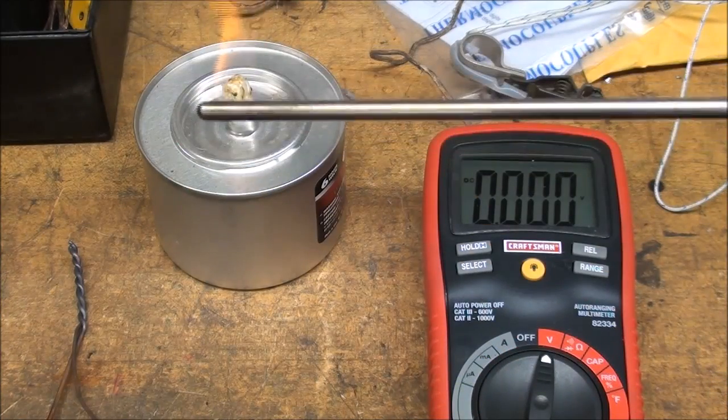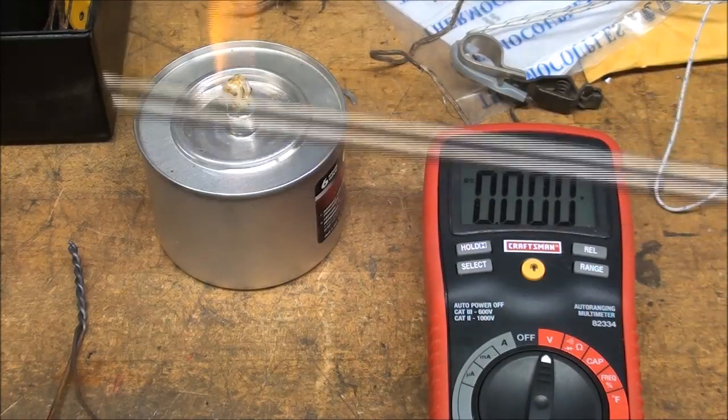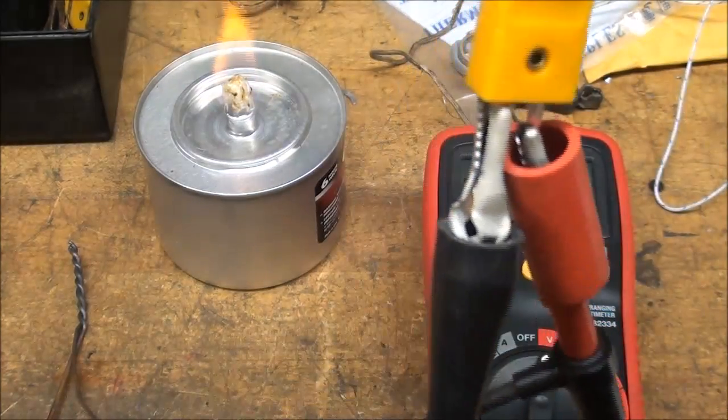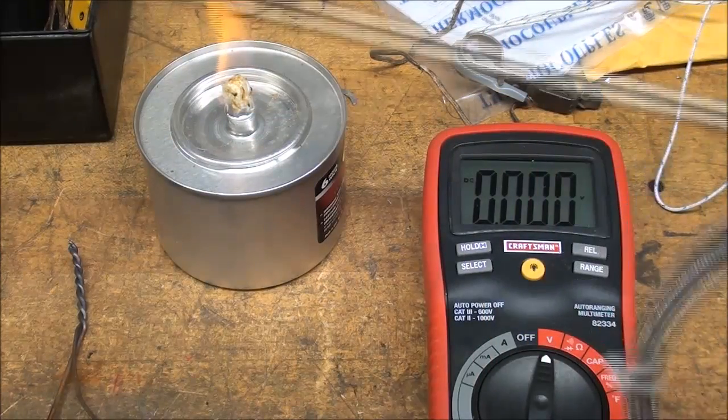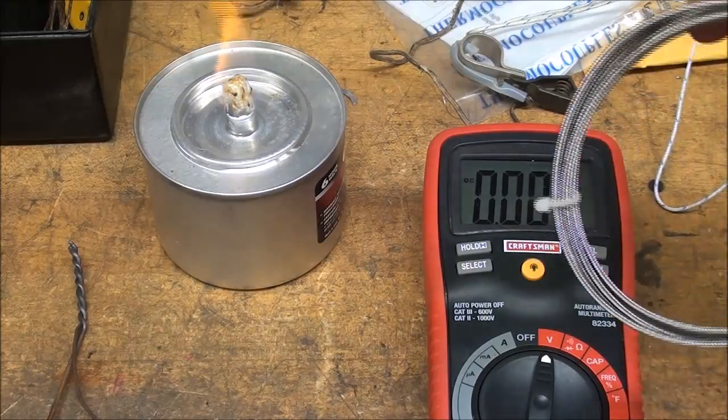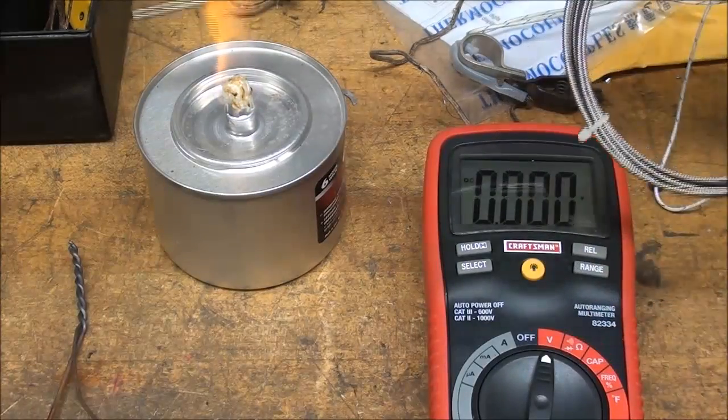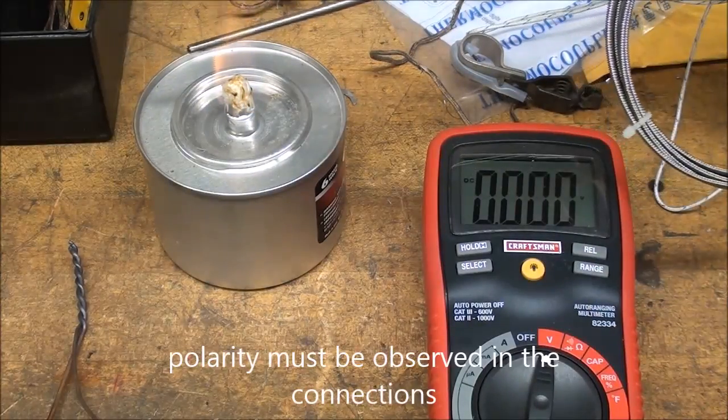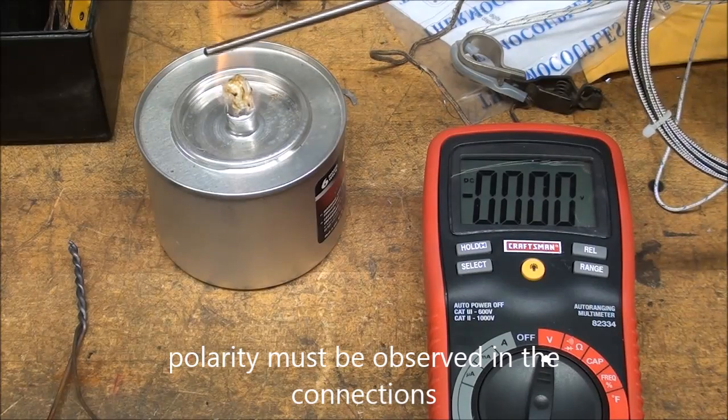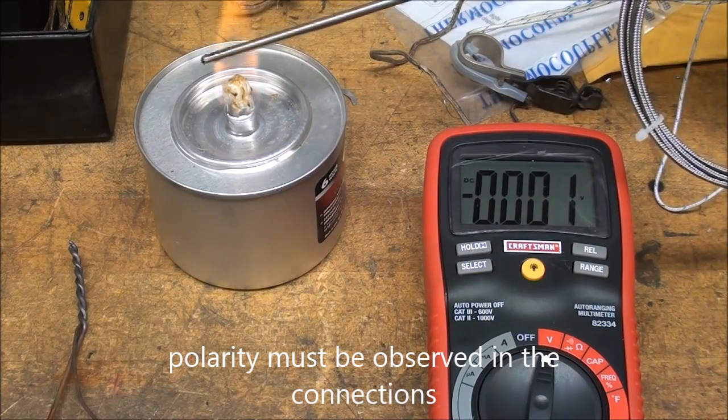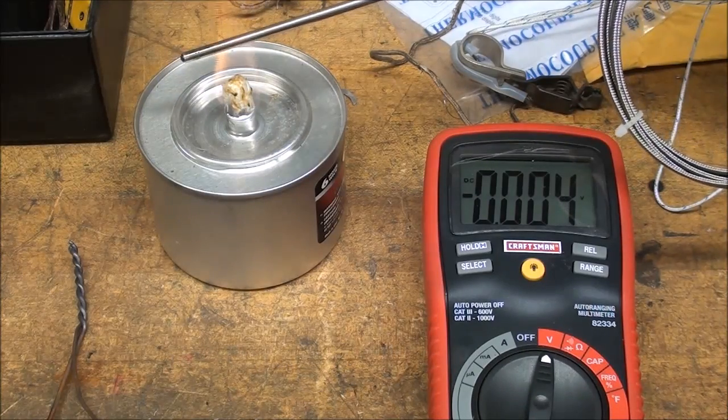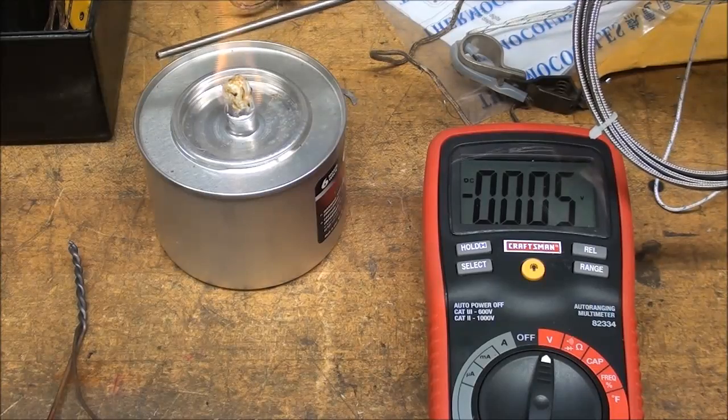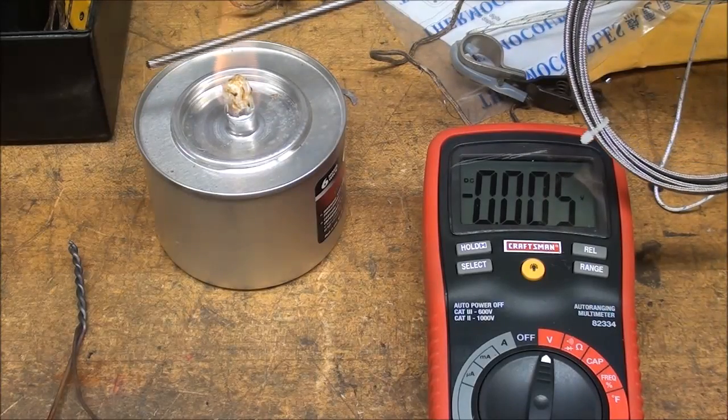Now this is a professionally made thermocouple hooked up to the same meter. I got to be careful I don't cross the wires there and get a short circuit. But watch the meter now as I put this in the alcohol flame. Again, that's in volts, not degrees.